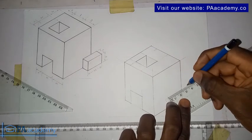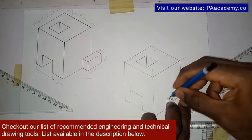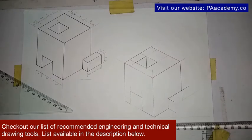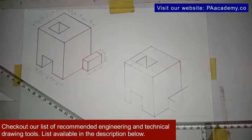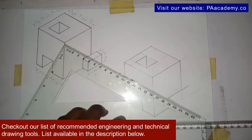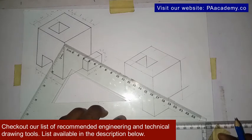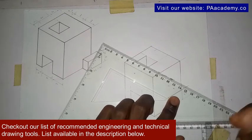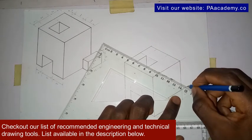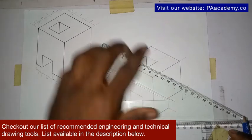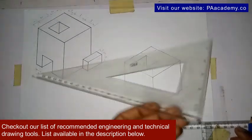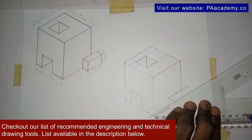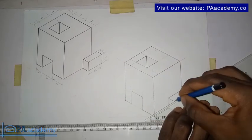Alright, so having done that, I bring in my set square. Okay. So from here, we can easily join it to that line that we have just drawn.